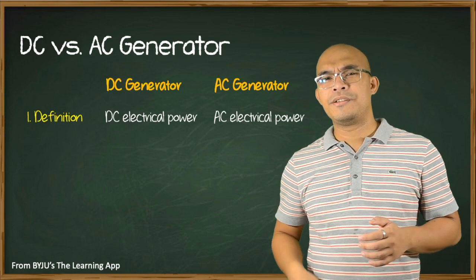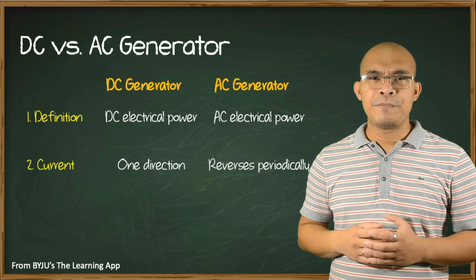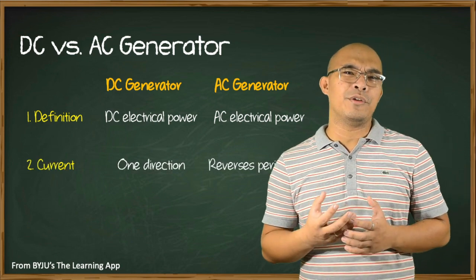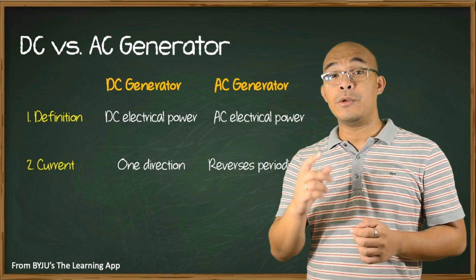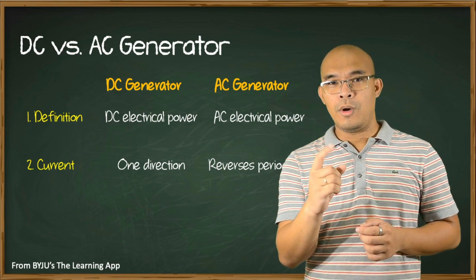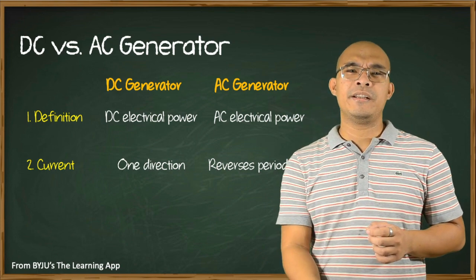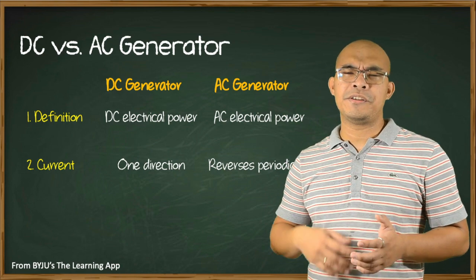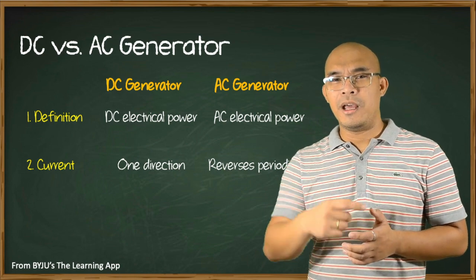With respect to the direction of current, in a DC generator the electrical current flows only in one direction, while in an AC generator the electrical current reverses direction periodically.